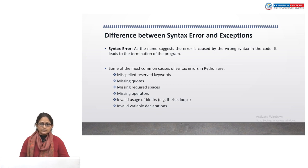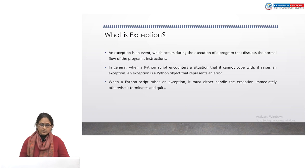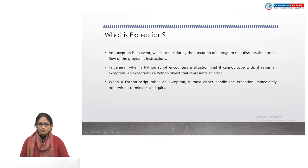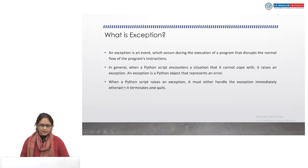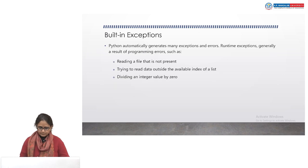These are some of the common errors that might occur in your Python program. Now we will learn about an exception — what is an exception and what are the causes of exception. An exception is an event which occurs during the execution of a program and that disrupts the normal flow of the program's instructions. In general, when a Python script encounters a situation that it cannot cope with, it raises an exception. An exception is nothing but a Python object that represents an error.